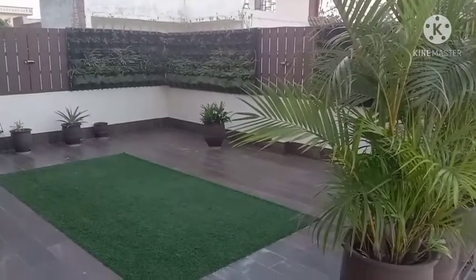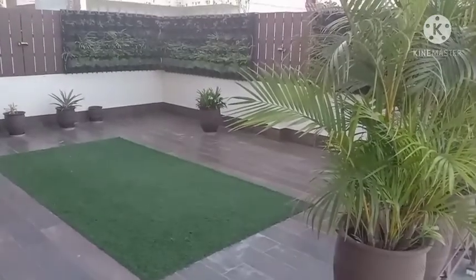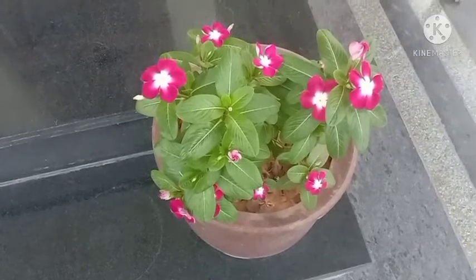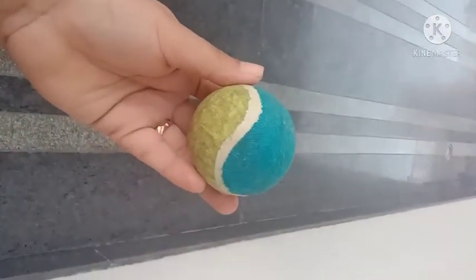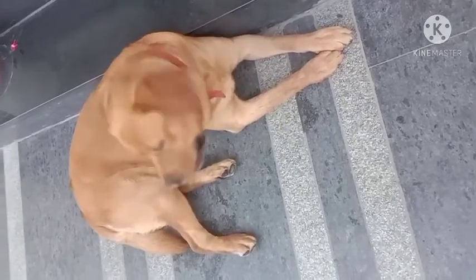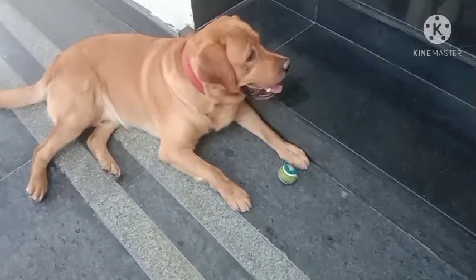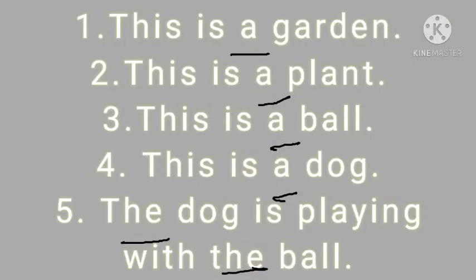This is a garden, a plant, this is a plant, this is a ball, a dog. The dog is playing with the ball. Here 'a' is underlined — it is an article. In 'this is a plant,' again 'a' is the article. In 'this is a ball,' again 'a' is the article. In 'this is a dog,' again 'a' is the article. In 'the dog is playing with the ball,' on both places 'the' is the article.